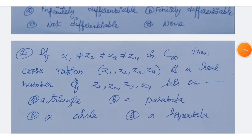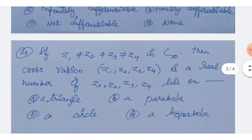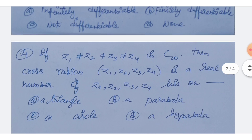Next question: if Z1, Z2, Z3, Z4 are distinct points in C-infinity, then the cross ratio of Z1, Z2, Z3, Z4 is a real number if Z1, Z2, Z3, Z4 lie on: Option A: a triangle. Option B: a parabola. Option C: a circle. Option D: a hyperbola.